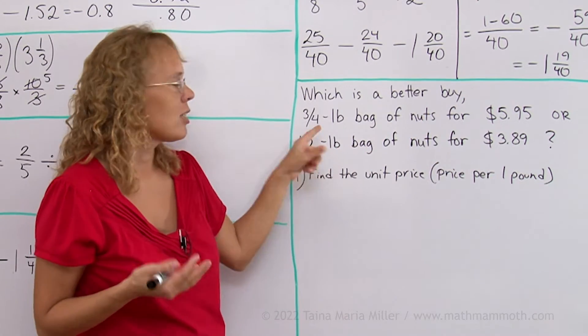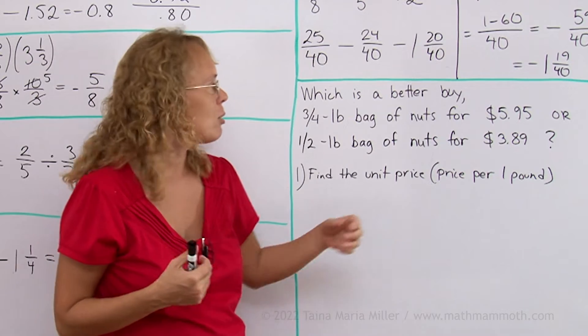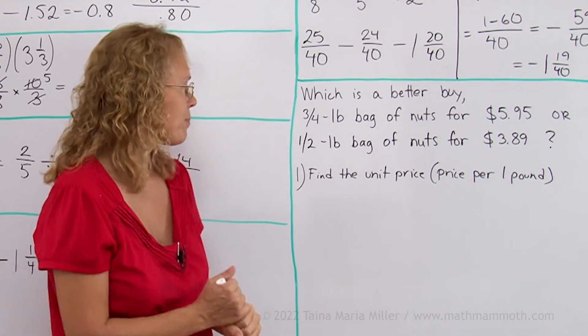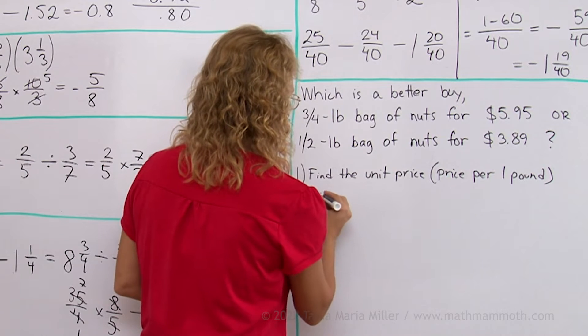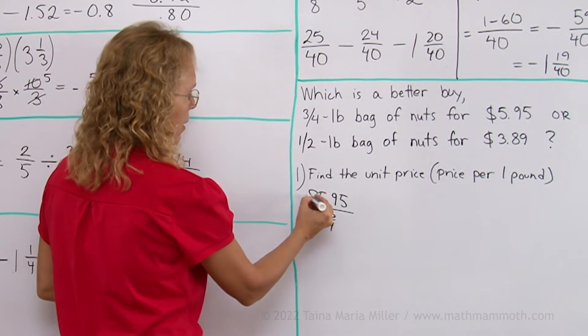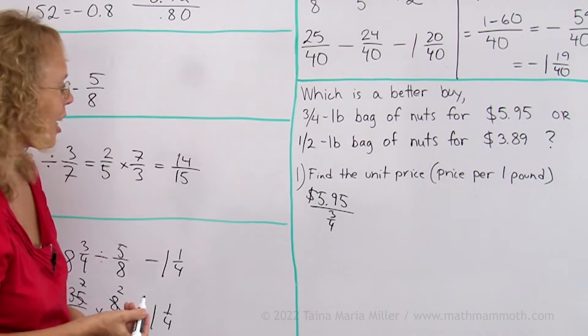This here being a fraction doesn't change the procedure. You will still divide this by 3/4 to get the unit price. You would have $5.95 divided by 3/4. Here we have our complex fraction again.